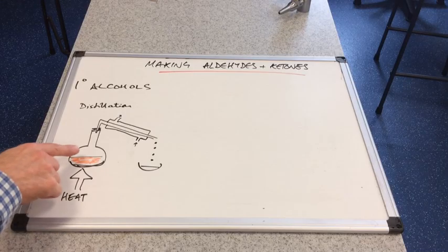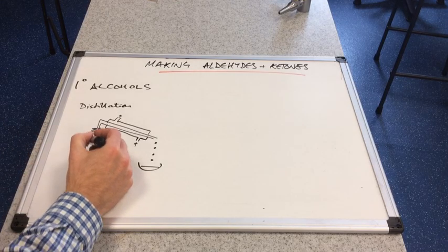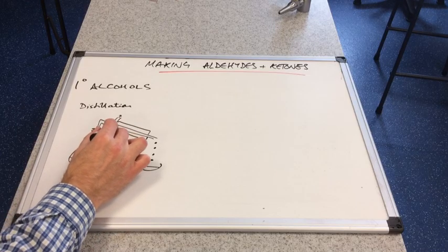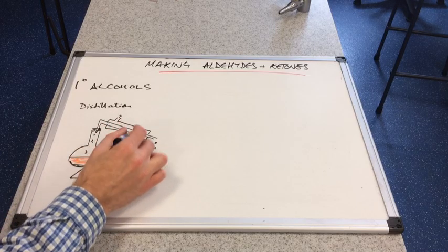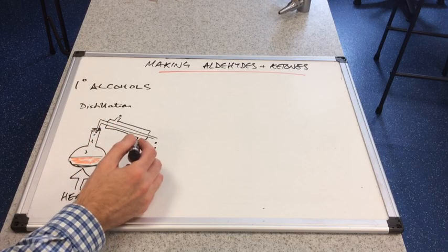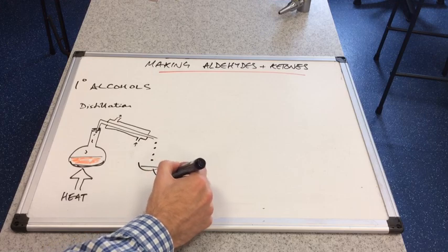Now aldehydes are very volatile and they would evaporate. And because they can, they would travel up through the condenser and condense because of the cold water flowing around the outside here into the liquid. And so what do we get here? We get the aldehyde.